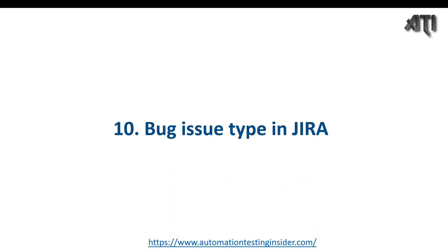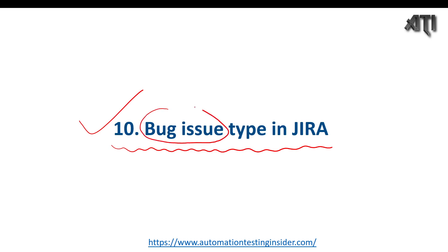Hello everyone, welcome back to another video of Automation Testing Insider. This is part 10 of the Jira series. Today I'm going to talk about bug issue type in Jira. In the previous video we already spoke about how to clone and link an issue in Jira. Today we'll focus on how we can create a bug type of issue in Jira and how to manage it.